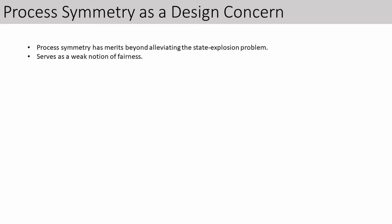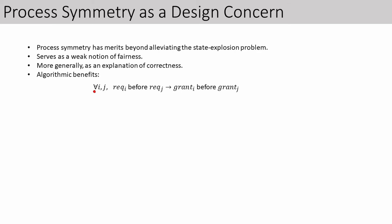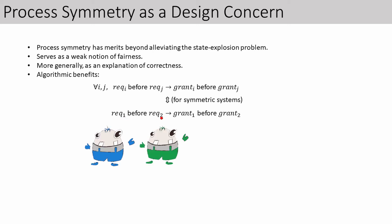Here we argue that process symmetry has merits that go well beyond alleviating the state explosion problem. Indeed, process symmetry can serve as a weak notion of fairness, in the sense that if a symmetric system is buggy, at least the bugs are not in a bias toward or against a certain process. More generally, symmetry can be seen as a partial notion of explanation as to why a system is correct. It also has algorithmic benefits — once you know your system is symmetric, you can model-check symmetric properties by checking an example. For instance, if you want to verify the property for all i and j that if thing i requested food before thing j then thing i is fed before thing j, in a symmetric system you only need to check this for a concrete example, such as i being the blue thing and j being the green thing.